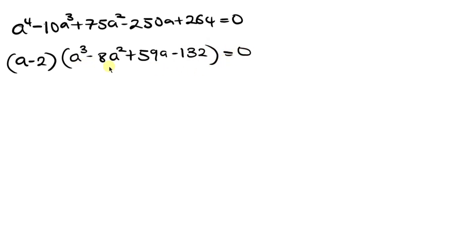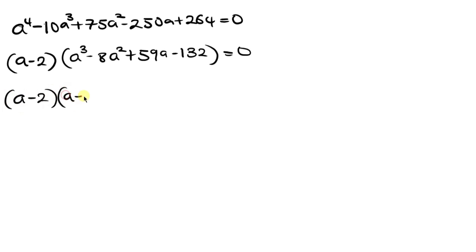Now we have two factors: (a minus 2) and the cubic expression. Using the factor theorem on the cubic, we find that (a minus 3) is also a factor. Dividing the cubic by (a minus 3) gives a² minus 5a plus 44 equal to 0.